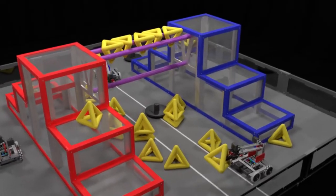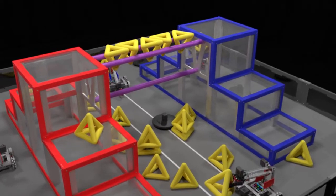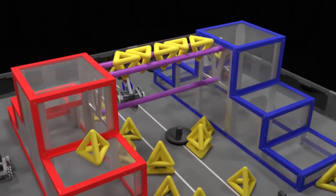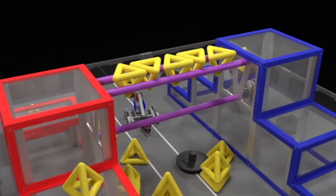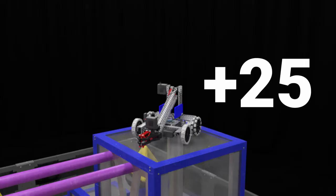There are three different positions for which a robot receives points at the end of the match: two parking positions and a hanging position. For a high parking, a robot must be on top of their highest platform and will receive 25 points.